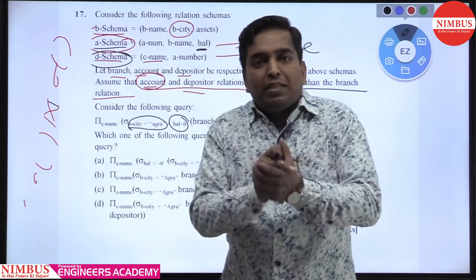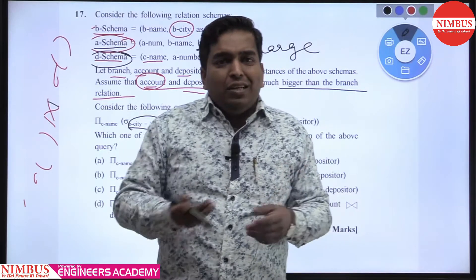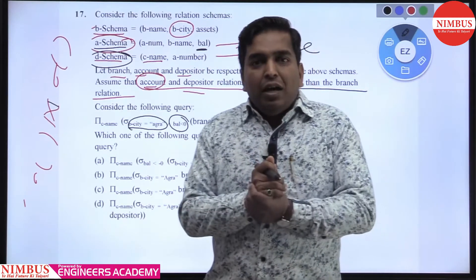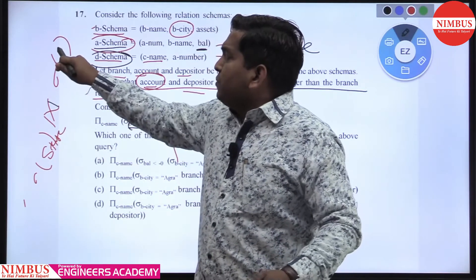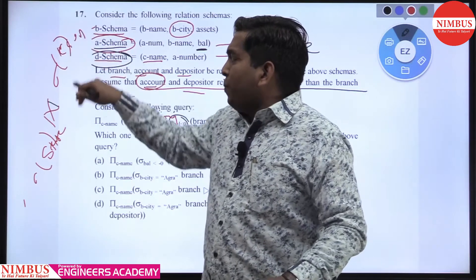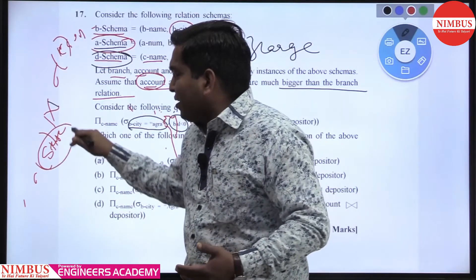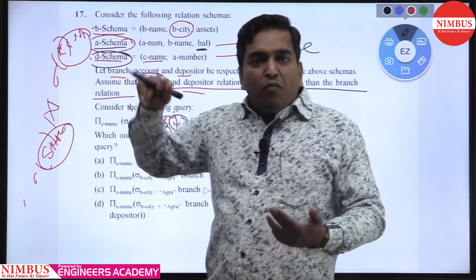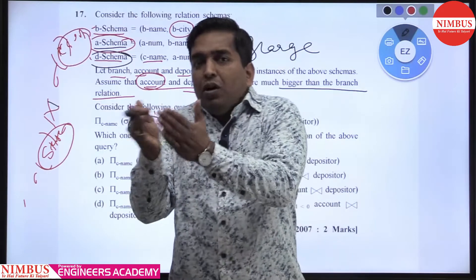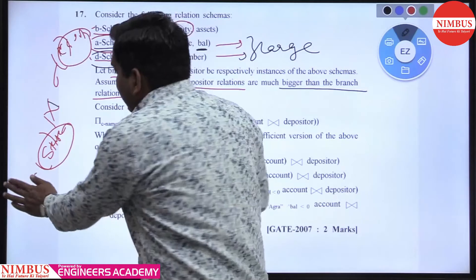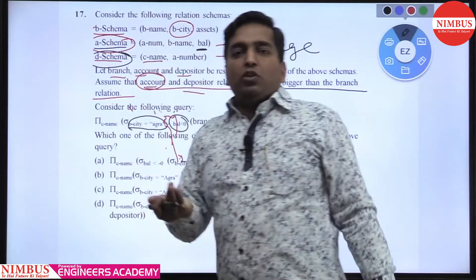Let's take a verbal example. There are two relations R and S. R has a condition on state — state belongs to Rajasthan — and S has a condition on CGPA. They share a common attribute SID. So first you filter state from R and filter CGPA greater than 9 from S, then join — you get far fewer tuples compared to joining first and then applying the condition.